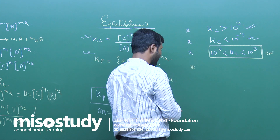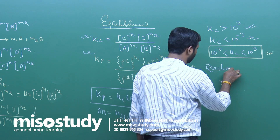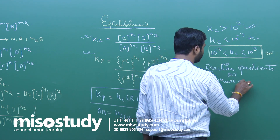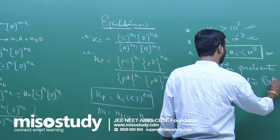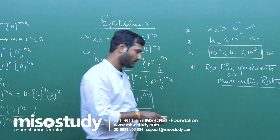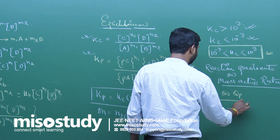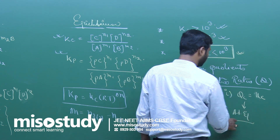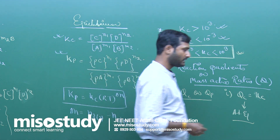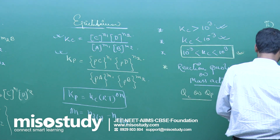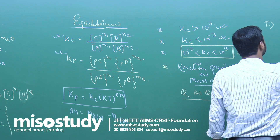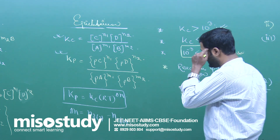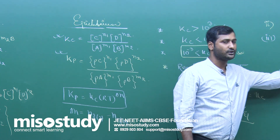We have the reaction quotient, also called the mass action ratio, symbolized as QC or QP. We have three conditions: if QC equals KC, the reaction is at equilibrium. If QC is greater than KC, or if QC is less than KC — in one case the forward reaction is favored and in the other case the backward reaction is favored.